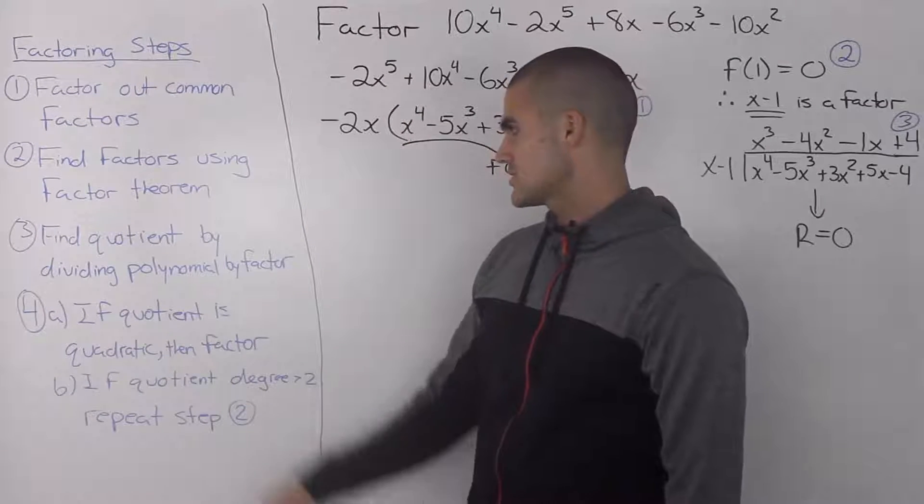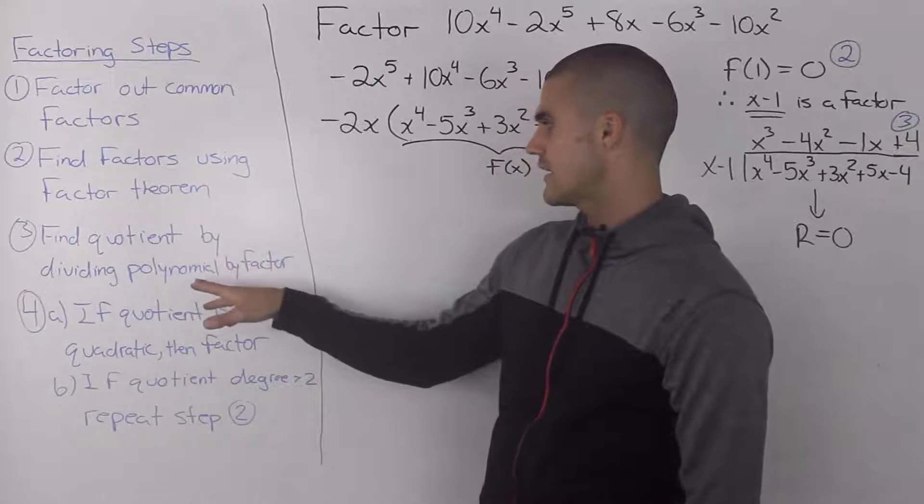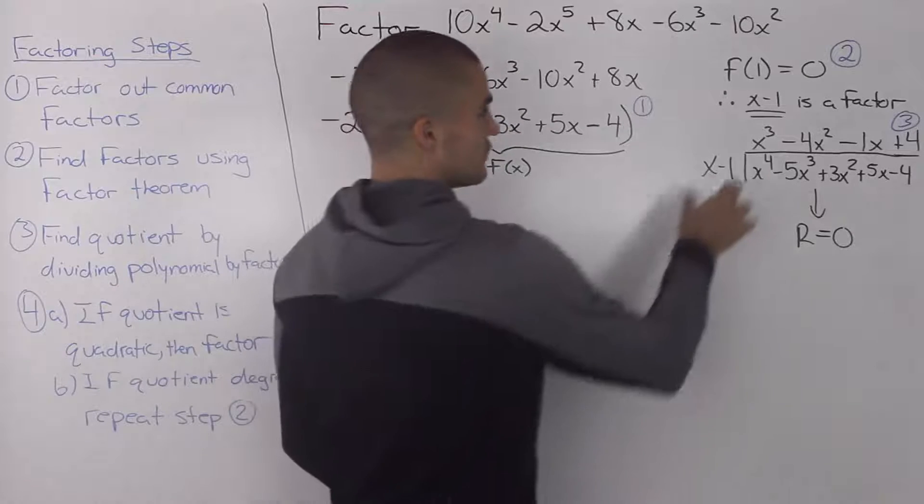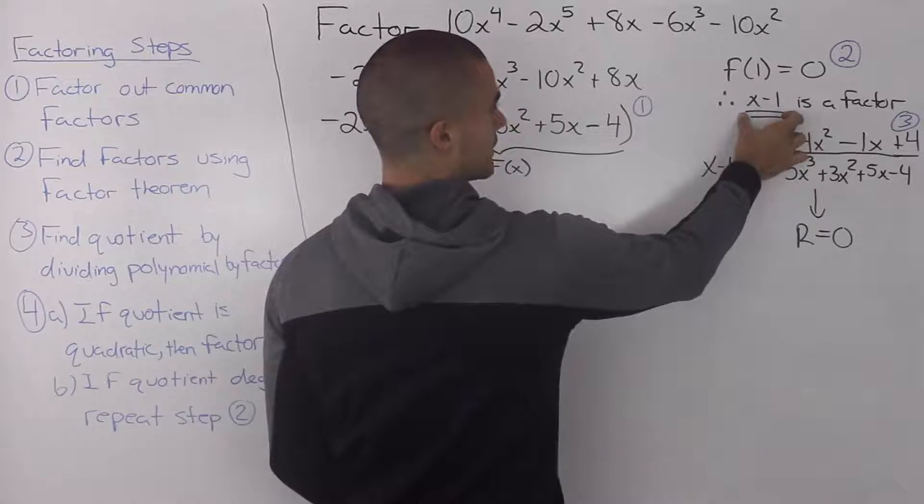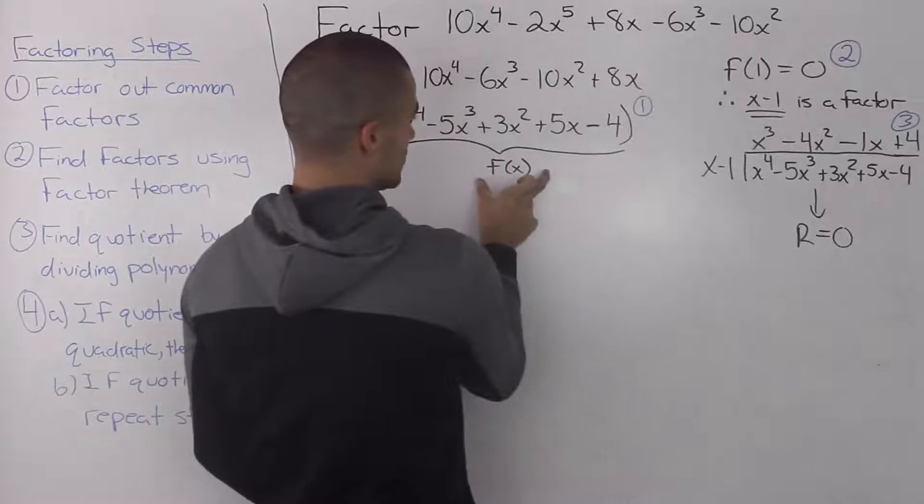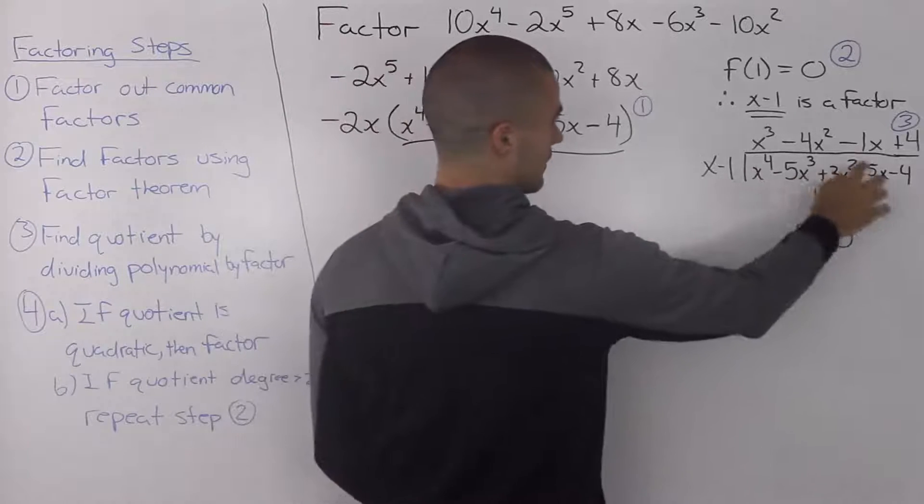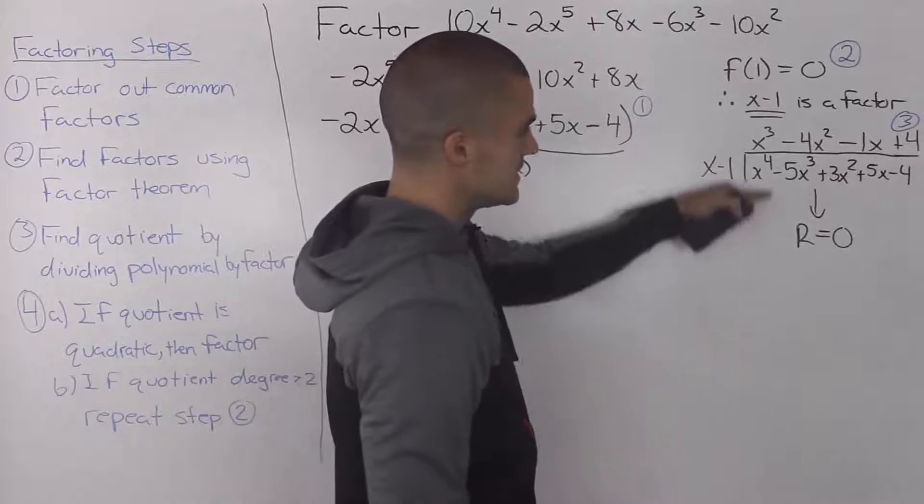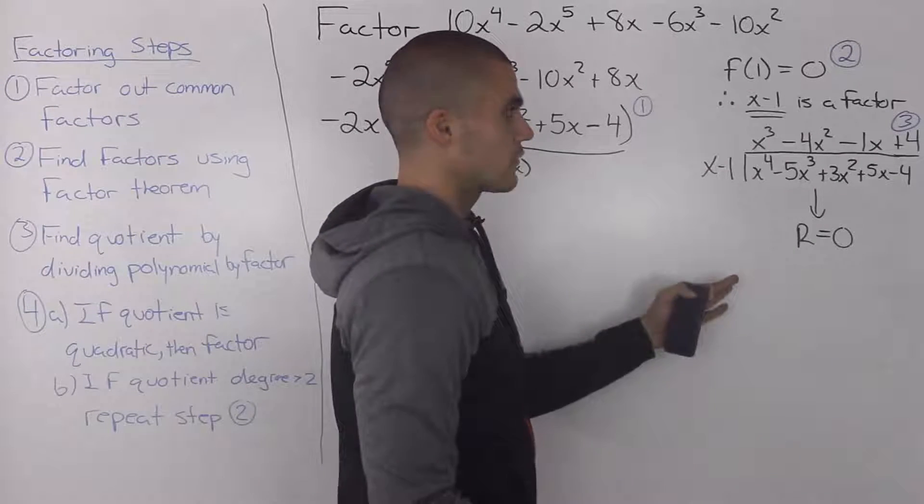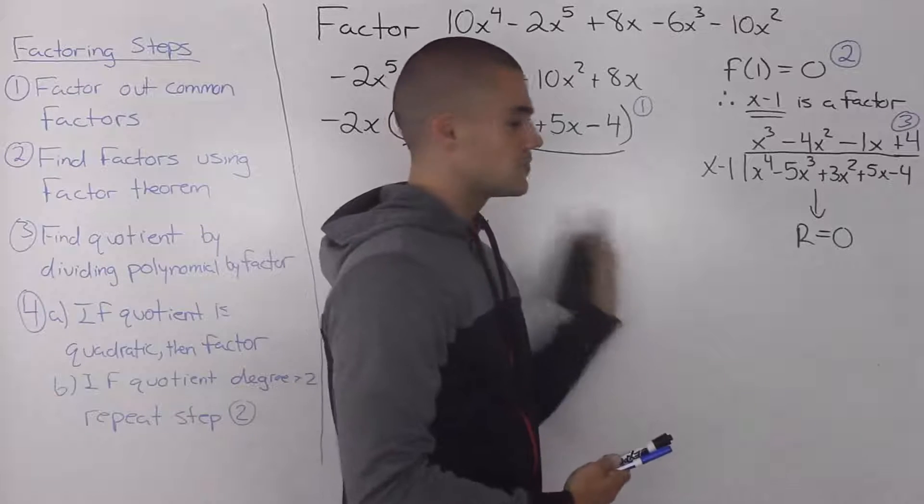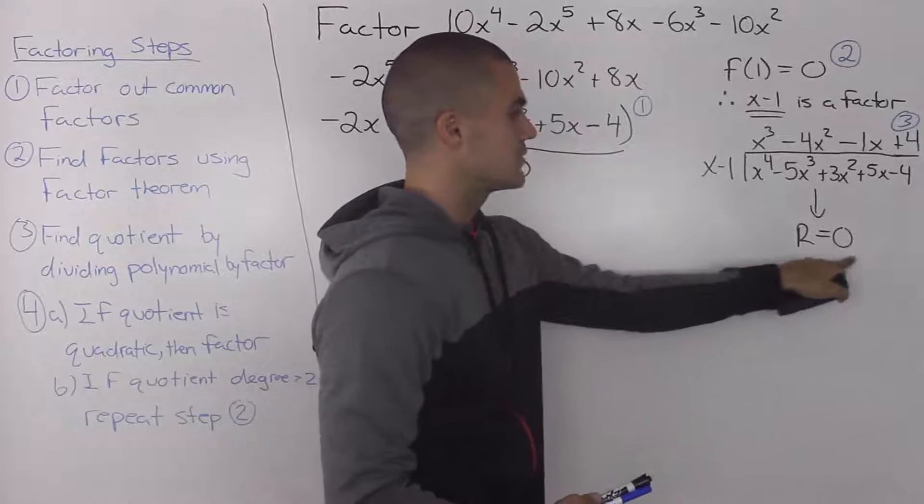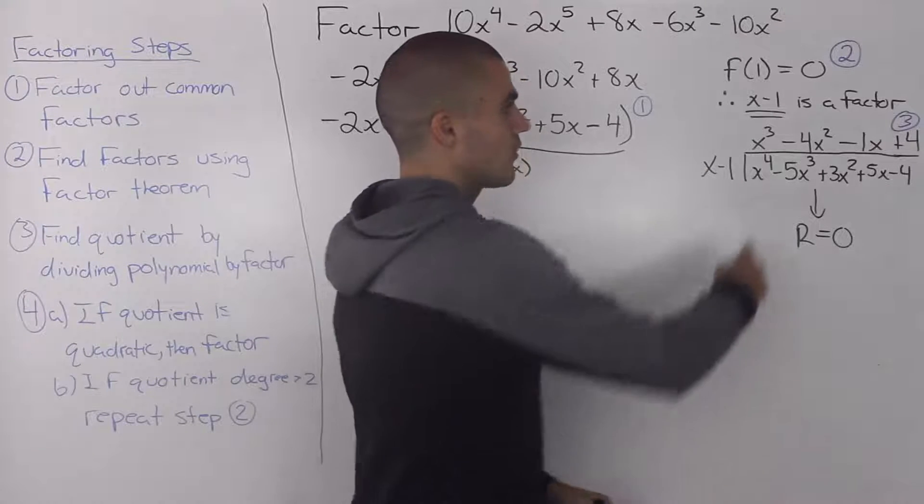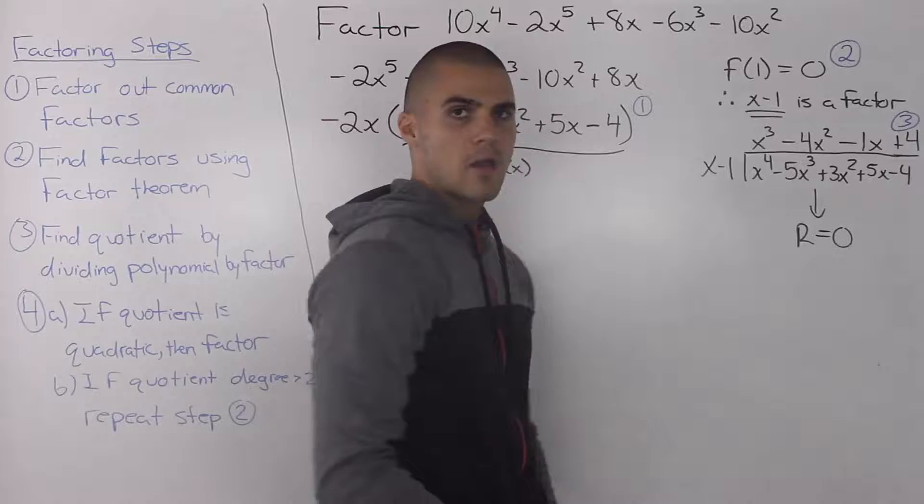Now we can move on to step 3. So we have to find the quotient by dividing the polynomial by the factor that we found in step 2. So the factor that we found in step 2 was x minus 1, and that's a factor of this polynomial. So we take this polynomial here, and divide it by that factor. Now I didn't write out the details of the division, however, as usual with step 3, as we mentioned in the previous video, you should always get a remainder of 0. And the quotient that we end up getting is x cubed minus 4x squared minus 1x plus 4.